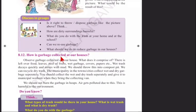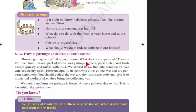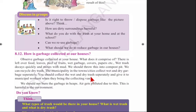How is garbage collected at our houses? There is leftover food, leaves, peel of fruits, wet garbage, covers, papers, etc. Wet trash decays quickly and mixes with mud — we should throw it into a compost pit. We can recycle dry trash. Municipalities collect wet and dry garbage separately, and we should collect and give wet and dry trash separately to municipal workers when they bring the collecting van.